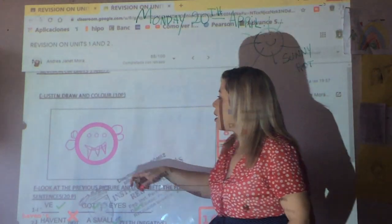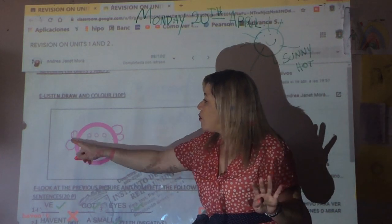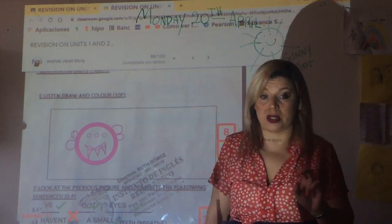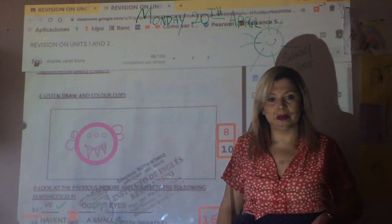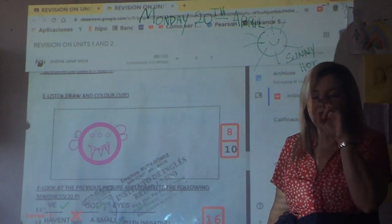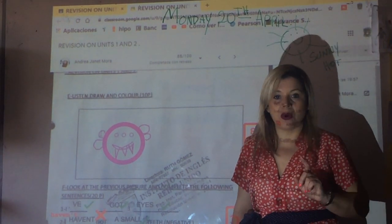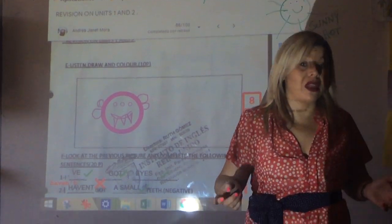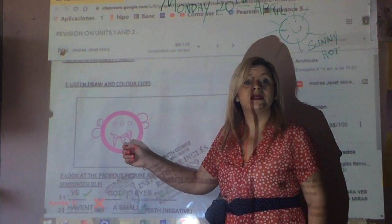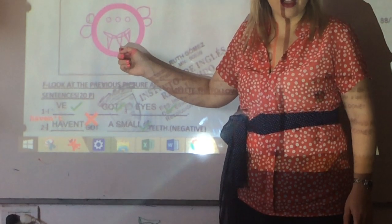And there comes the monster. Can you see it? So you have the monster. The dictation said: 'I have got four ears' — one, two, three, four. 'I've got three eyes.' 'I've got a big mouth.' And the listening said: 'I haven't got small teeth' — so you don't have small teeth. What did you draw? The teeth — the big ones. Yes? Okay. There's the little monster, and below are the sentences.